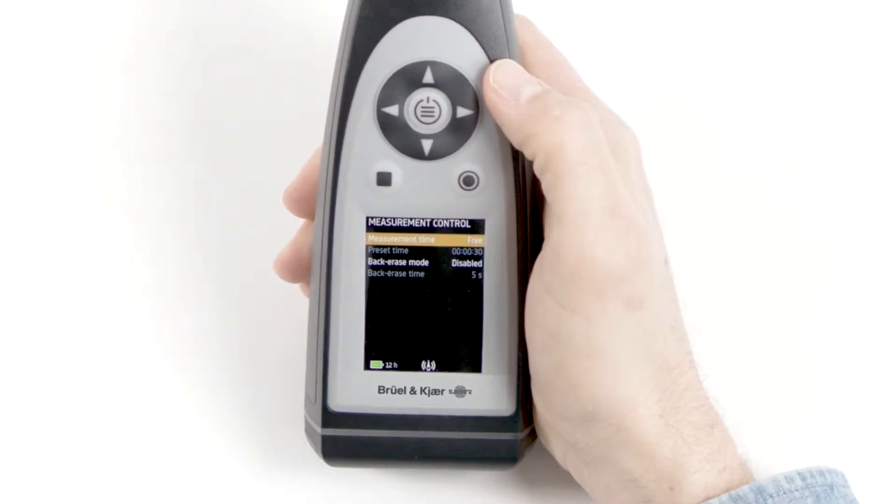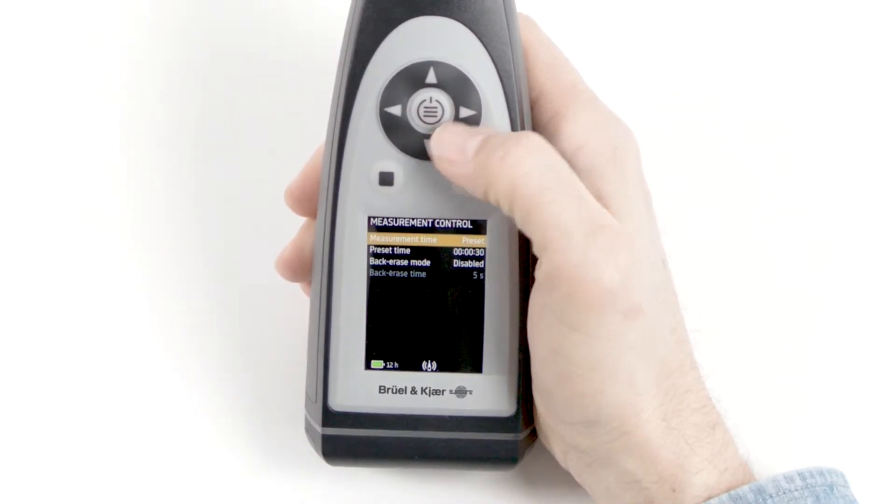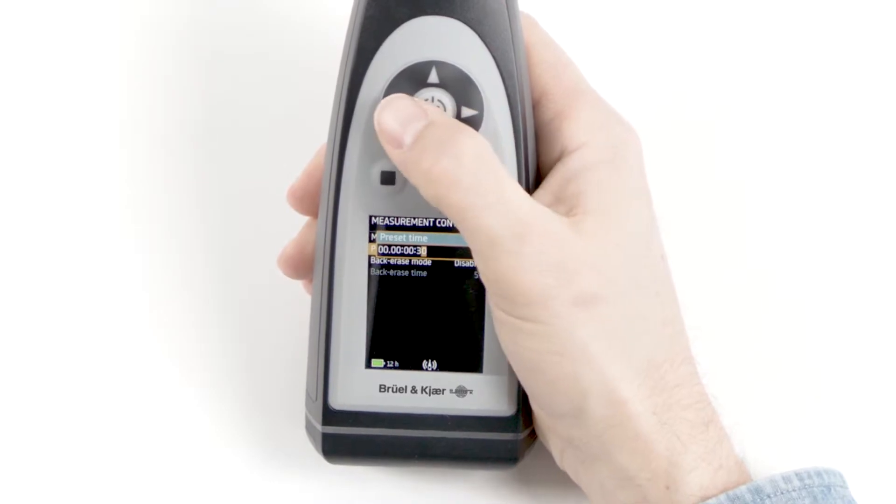Under measurement control, we can choose whether we are having a free or preset measurement time. I will change to a preset measurement time and set that to 10 seconds.